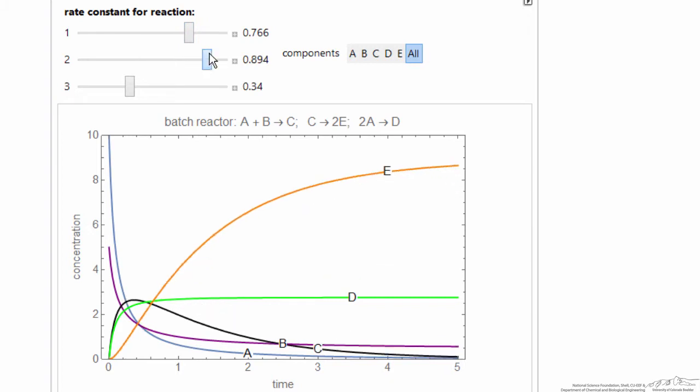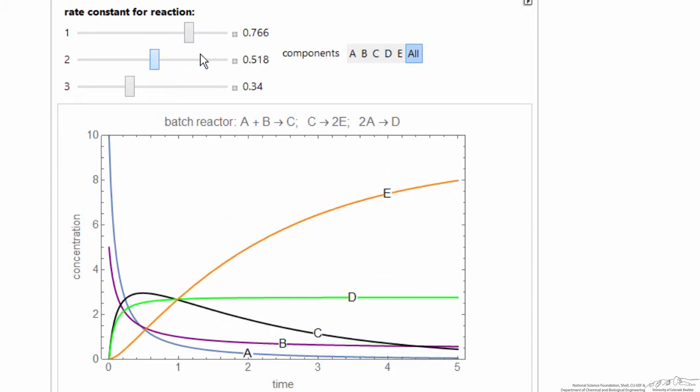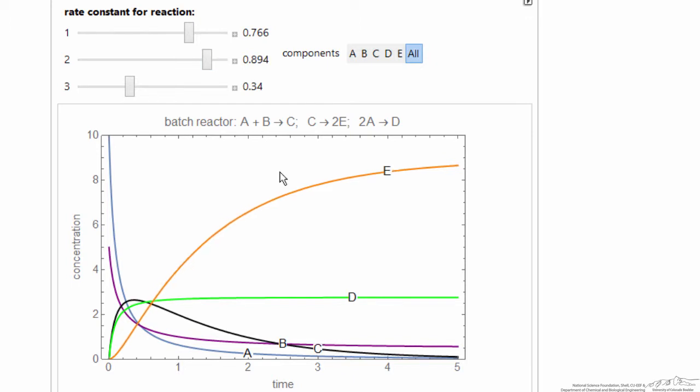And I can change the second reaction. So this gives us an idea of behavior in a batch reactor, an isothermal reactor with multiple reactions. You can see how changing one of the rate constants affects all of the products when we have this series and parallel network of reactions.